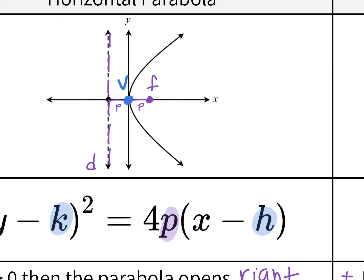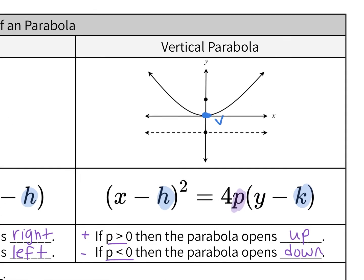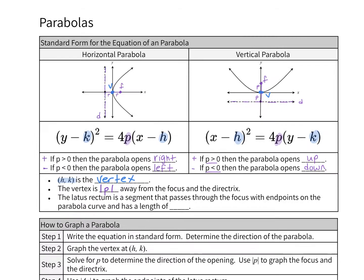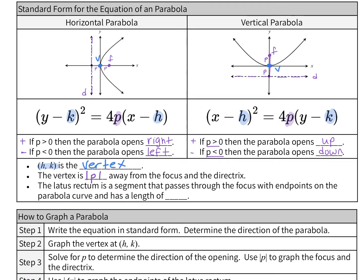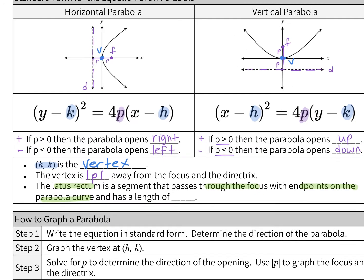So p to the left and p to the right when it's horizontal. For the vertical parabola, same deal — just another direction. The point inside the parabola is the focus, and the line is the directrix. So it's p units up to get to the focus and p units down to get to the directrix. The latus rectum is a segment that connects the parabola's curve but passes through the focus — endpoints on the curve. It's going to have a length of absolute value of 4p. So even if it's a negative number, that's the length of the latus rectum.